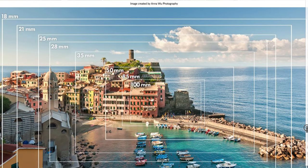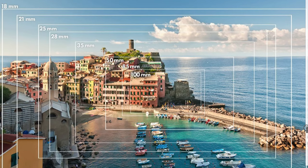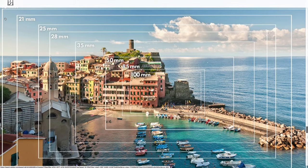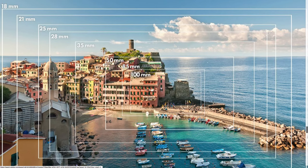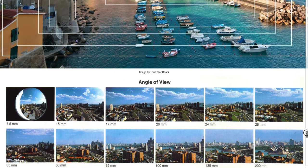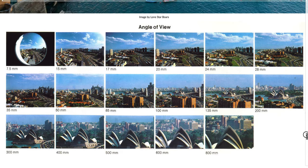Looking at different lenses, this doesn't completely give you the effect of different lenses because this is really just cropping the photo smaller and smaller. But it's still a good representation — if you were standing in the exact same place with all these different lens options, for 35 millimeters you capture part of the scene, for a really wide lens like 18 you capture way more, while at 100 millimeters you're getting an even smaller section.